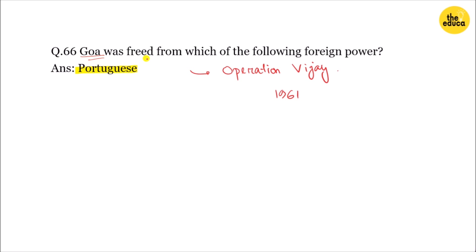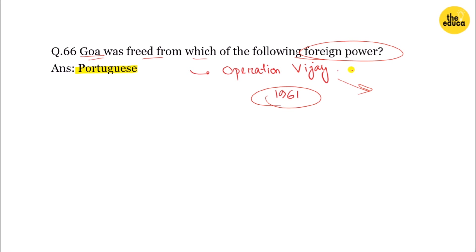The last question: Goa was freed from which of the following foreign powers? Goa was liberated in 1961 through Operation Vijay. Goa was freed from Portuguese rule.